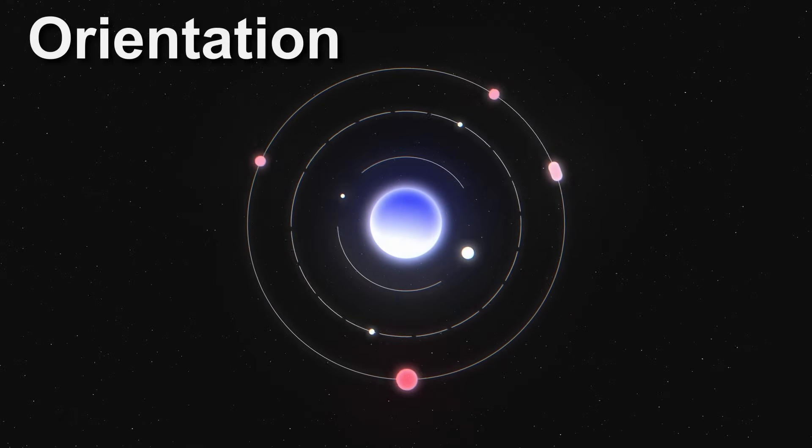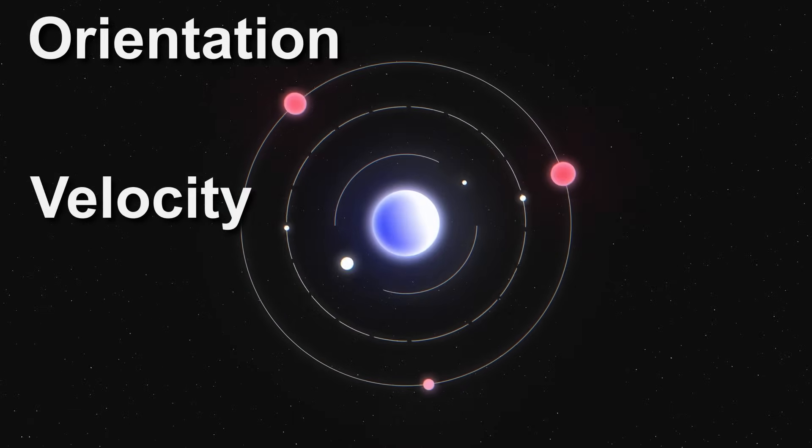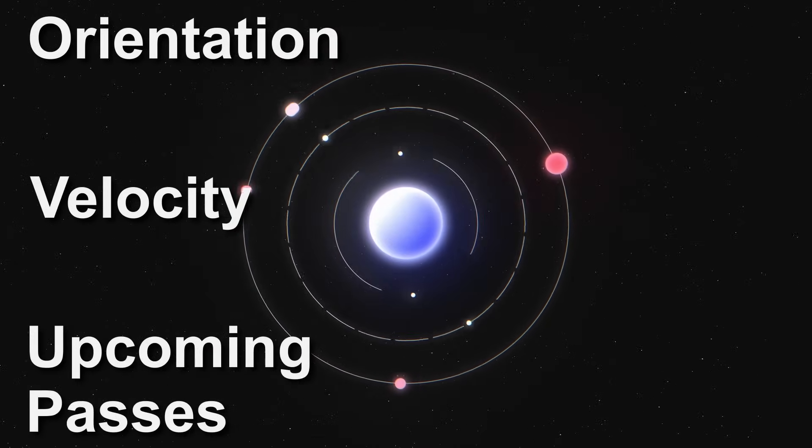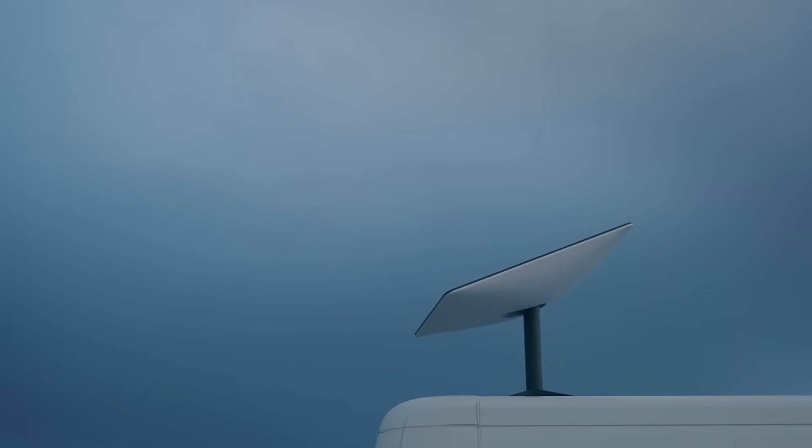By getting the NORAD ID of a satellite, you can obtain all sorts of interesting information about that satellite, including its orientation within orbit, velocity, upcoming passes, and more. In this video, we will be tracking down Starlink-31046, which is a satellite within the Starlink constellation.